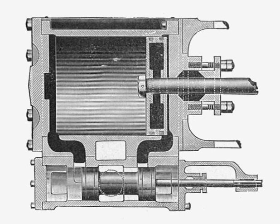In the 19th century, steam locomotives used slide valves to control the flow of steam into and out of the cylinders. In the 20th century, slide valves were gradually superseded by piston valves, particularly in engines using superheated steam.